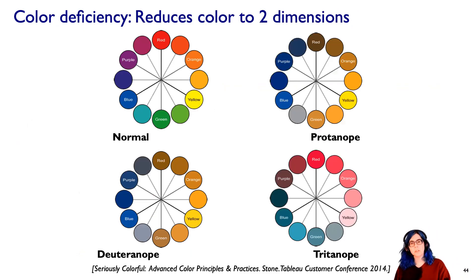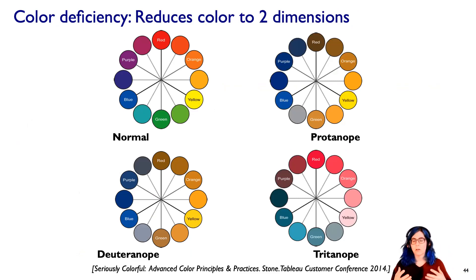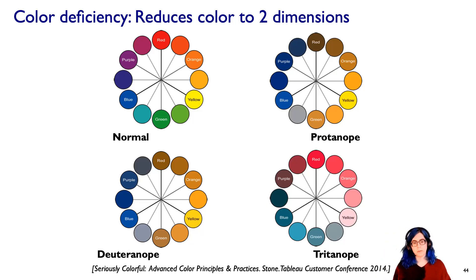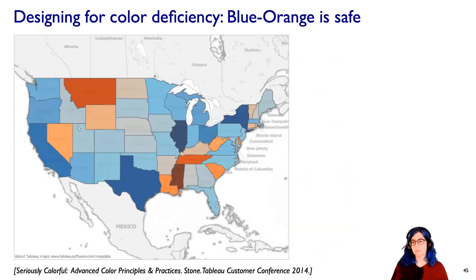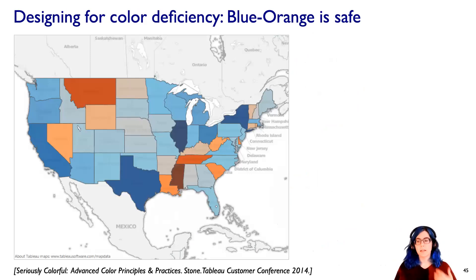Color deficiency really reduces color to just two dimensions, but that doesn't mean there's no color at all. Looking at normal vision versus protanope and deuteranope red-green deficiencies, and the much rarer tritanope blue-yellow deficiency, we can still see certain amounts of color change. If you're designing a color map for color-deficient vision, one of the safer choices is the blue-orange ramp, because those differences are preserved by both red-green color deficiency mutations.